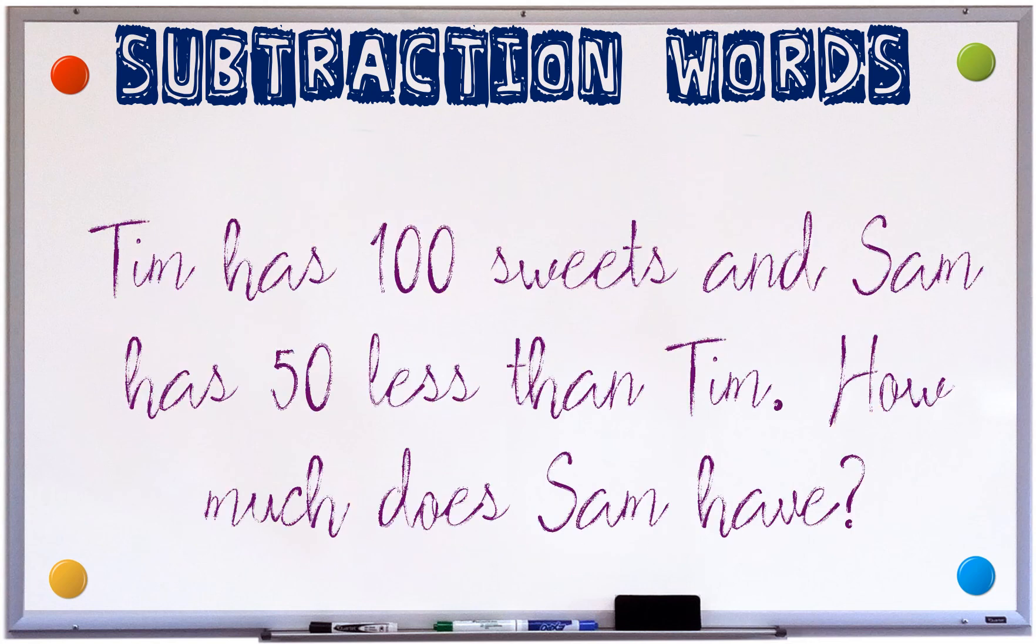Tim has 100 sweets and Sam has 50 less than Tim. How much does Sam have? If Tim has 100 and Sam has 50 less, are we plussing or minussing? Definitely minussing. 100 take away 50 is 50, so Sam has 50.